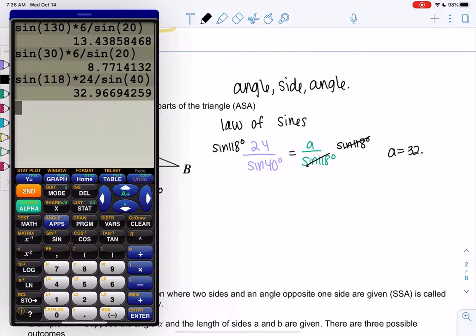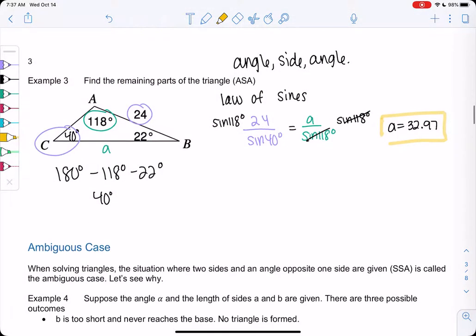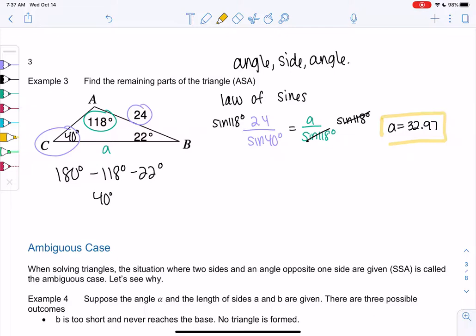If you're getting different numbers, it's likely your calculator is in radian mode. Let me show you what happens if you accidentally flip it. I've been putting the letters on top and sine on bottom. It does work the opposite way. So instead, if I did sine of 40 over 24 equals sine of 22 over B...